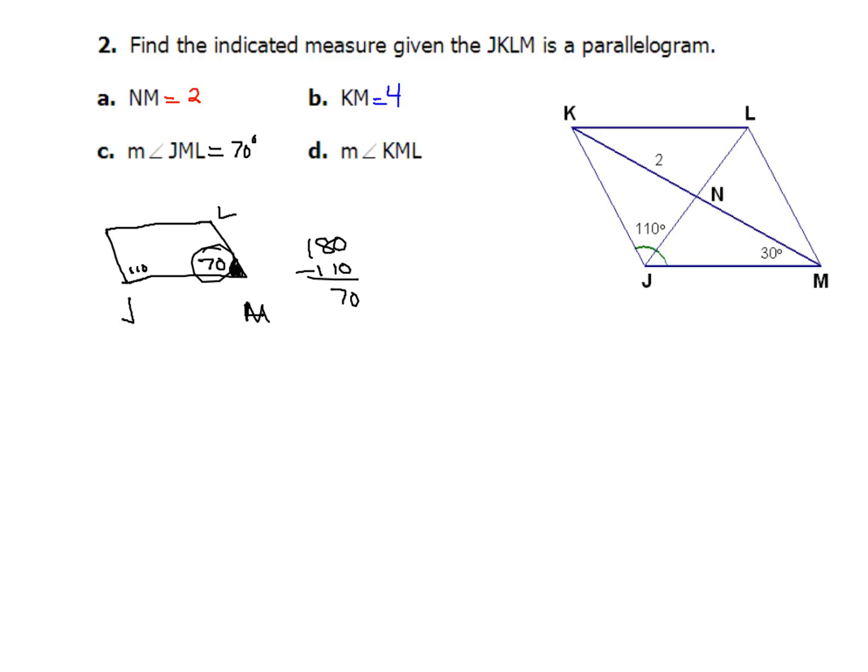Now for part D, I've got to find the measure of angle KML. And this one's going to be a little bit more work. Because check it out, I'm going to use what I just found, and I know this whole thing right here is 70. But I know part of it's 30, so that means that this missing piece right here has got to be 40, because 40 plus 30 gives me 70. So the measure of angle KML is just 40 degrees. And that's it, I'm done, no big deal there.